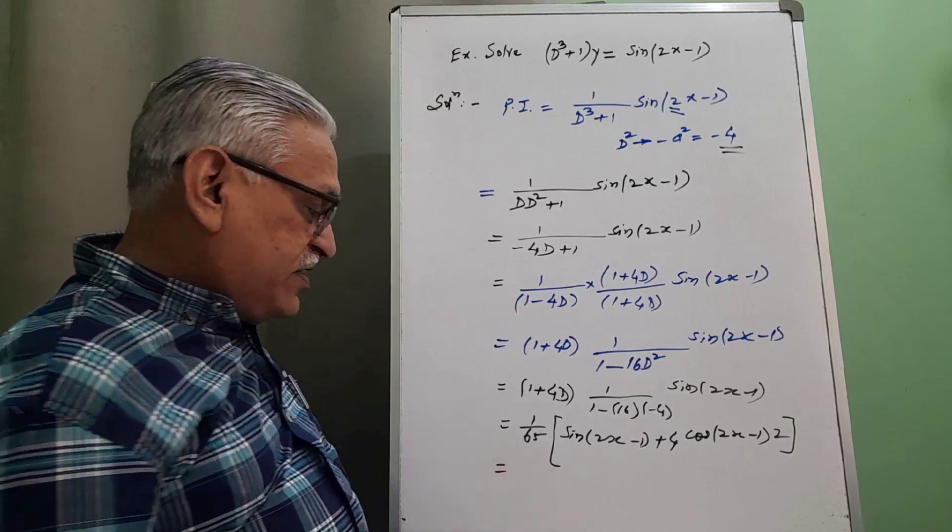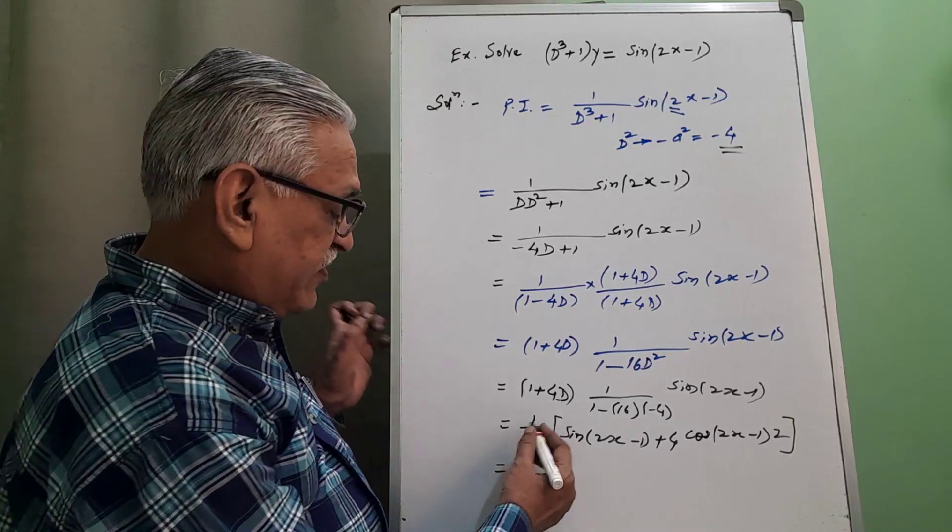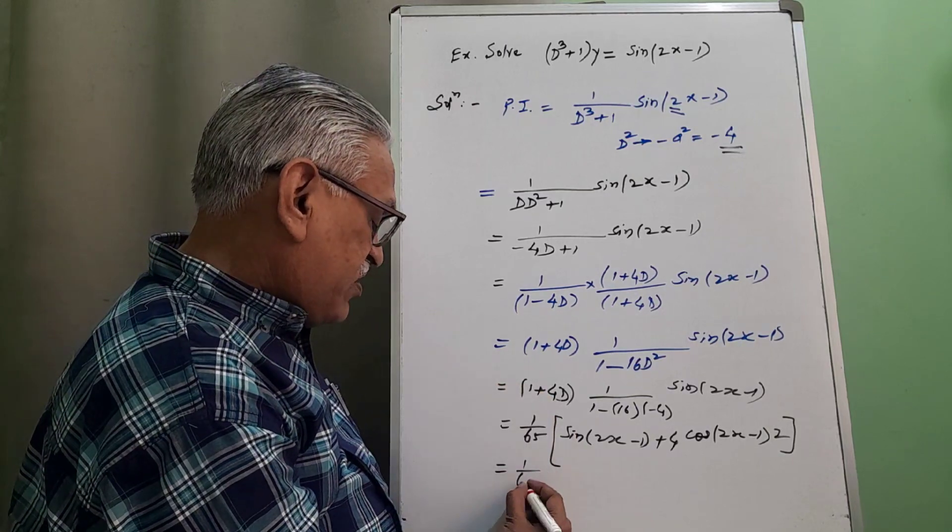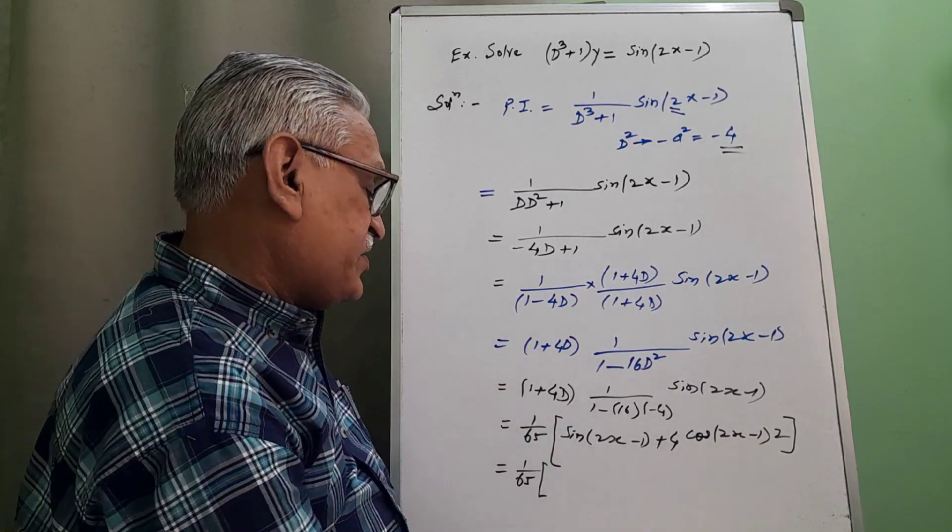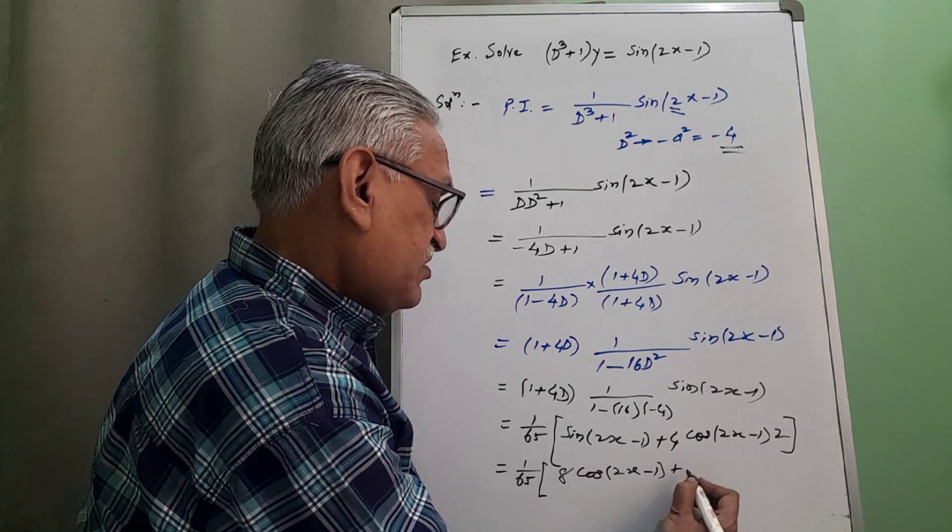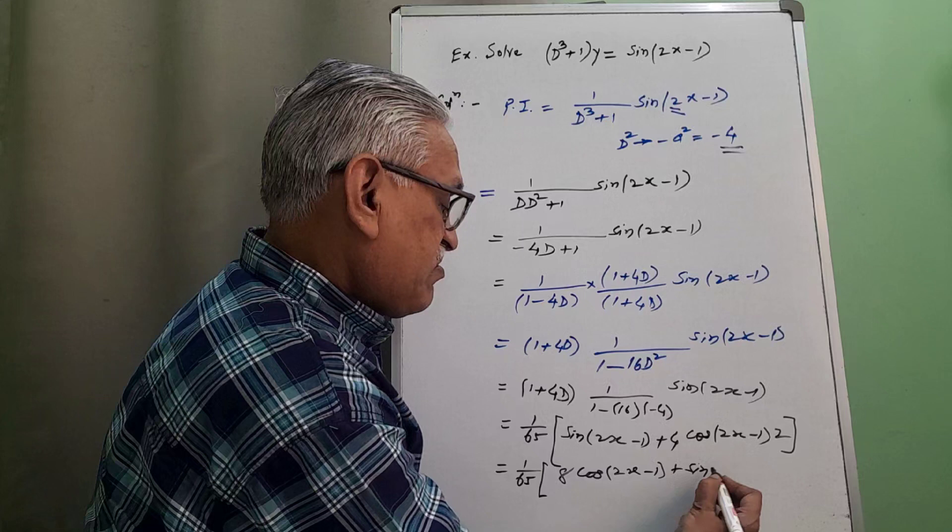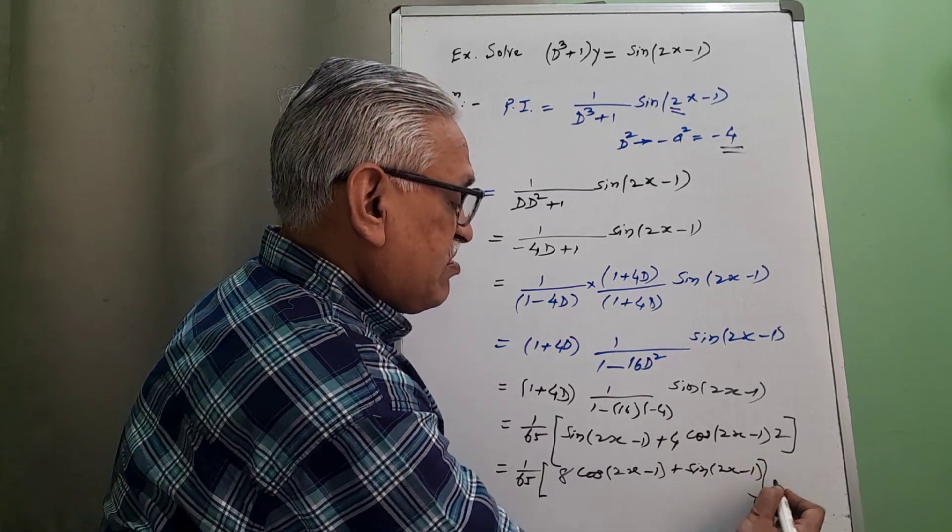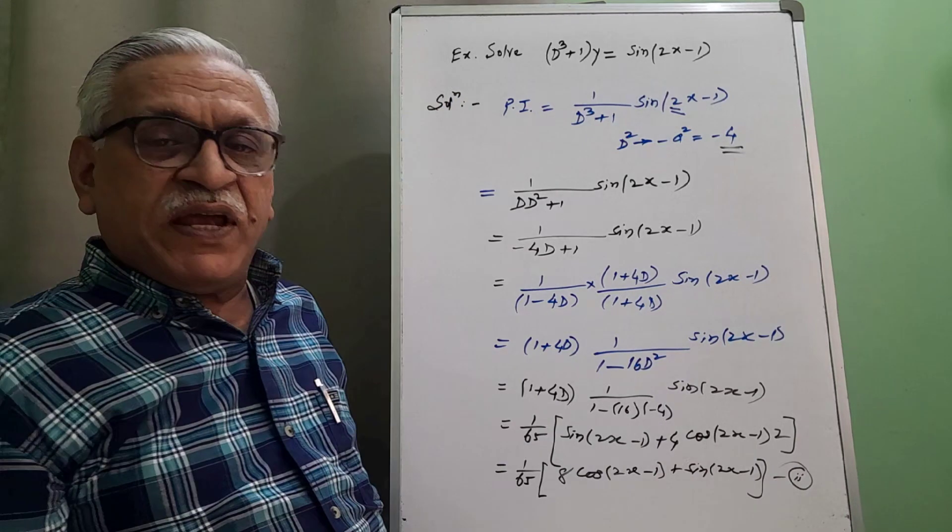And therefore we have the final answer as this final value for PI as 1 by 65, 8 cos of 2x minus 1 plus sin of 2x minus 1. We call this equation 2, PI.